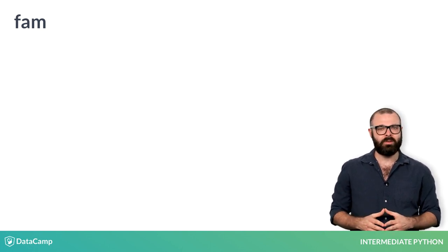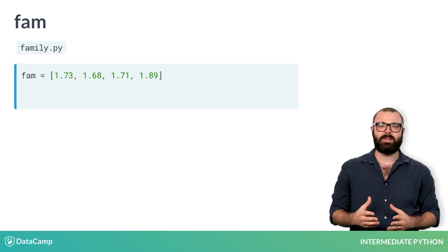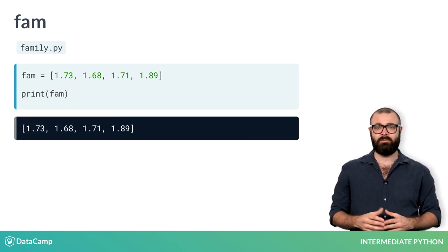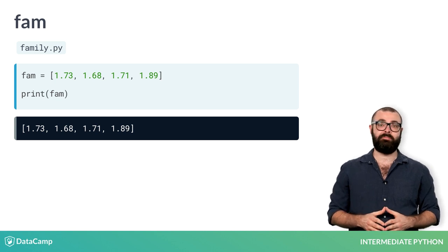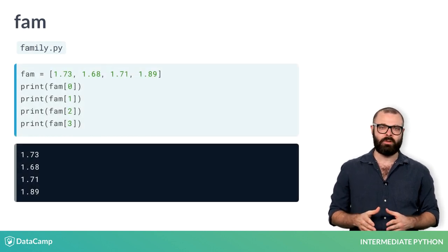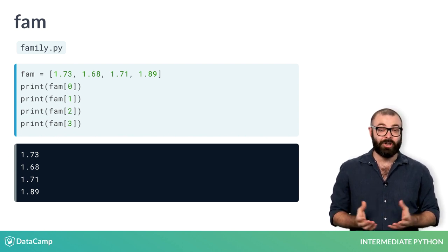Remember the fam list containing the heights of your family? Here it is again, in the family.py script. Suppose that instead of a single printout of the entire list, like this, we want to print out each element in the list separately. You could do this by doing four print calls with the correct subsetting operations. Instead of this repetitive and tedious approach, you could use a for loop.